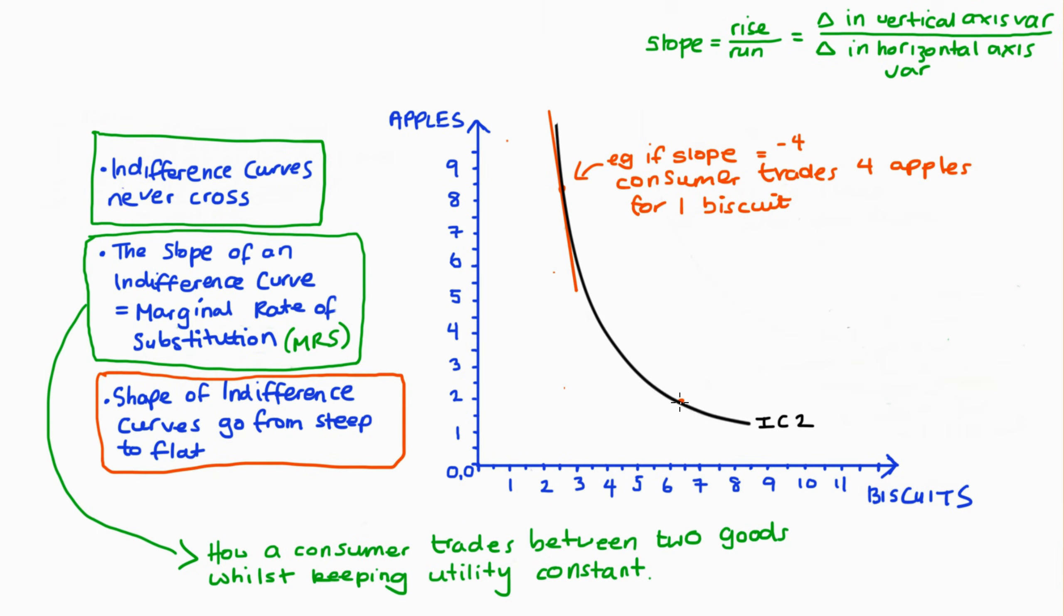By the time we get to here, maybe our slope is more like negative a half, which means that I would trade off half an apple for one biscuit.